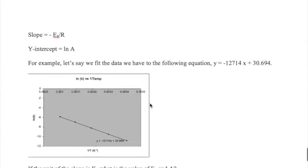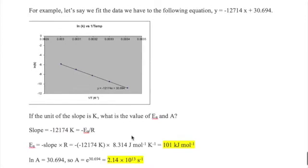For example, let's say we take the data I just showed you and fit it with a line equation and get Y equals minus 12,174 times X plus 30.694. If the unit of the slope is Kelvin, how do we calculate EA and A?